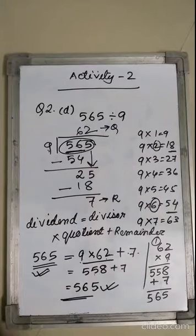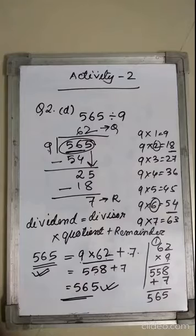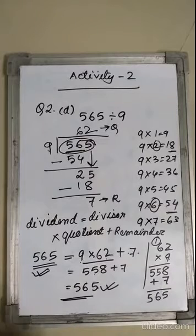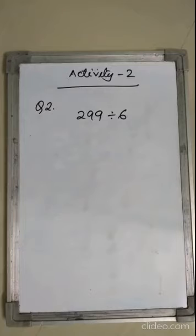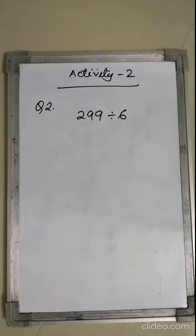You have to do it like this. I will give you some homework and classwork for using the division algorithm. From Activity 2, Question number 2: divide and then check whether dividend equals divisor into quotient plus remainder. We have to prove the division algorithm this way.